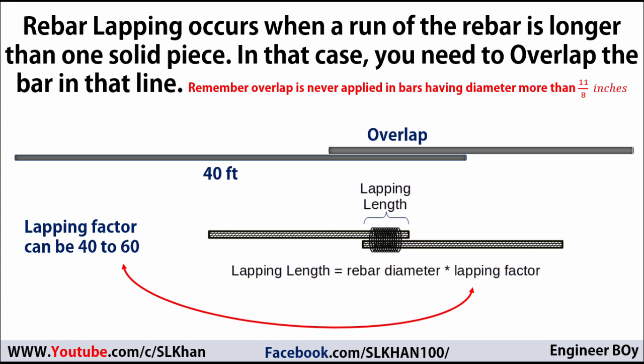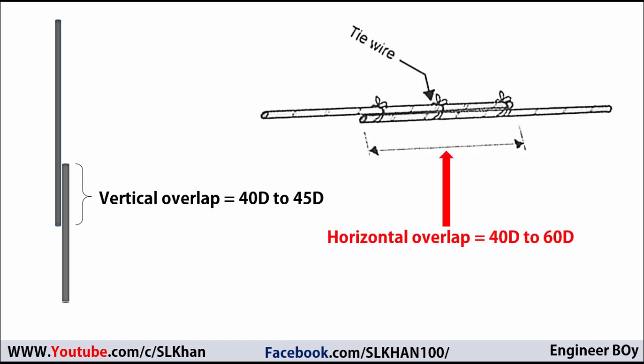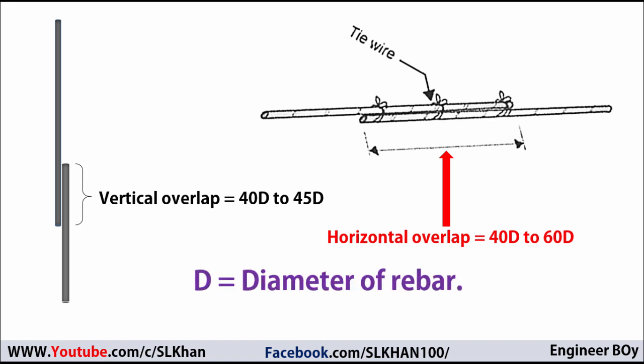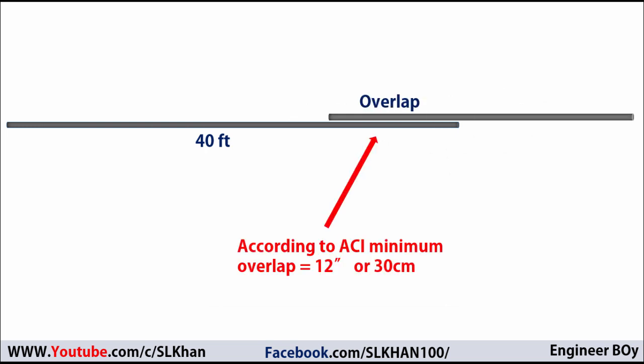In drawings and specifications, the length of a vertical overlap is taken as 40D to 45D. Also, the length of a horizontal overlap is taken from 40D to 60D, where D represents the diameter of the bar. According to ACI, the length of overlap must not be less than 12 inches.